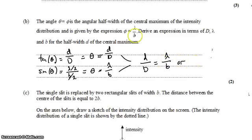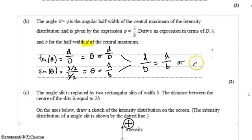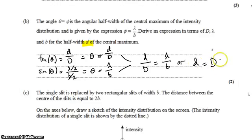Or, since we want an equation for d, we'll just rearrange that to little d equals big D lambda on b.